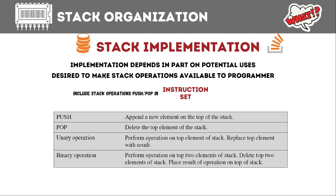We also have a unary operation that replaces the top element with another result — for example, replacing five with seven at the top of the stack. We can also implement a binary operation, as in zero-address instruction formats where operands are implied to be on the stack. In a binary operation, we pop the top two elements, perform the operation on them, and store the result at the top of the stack.